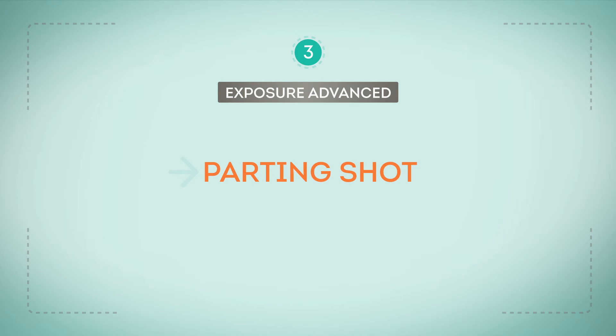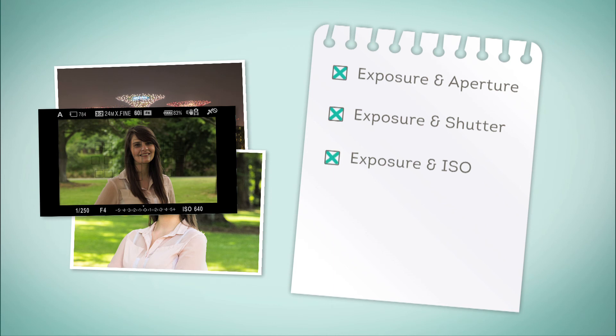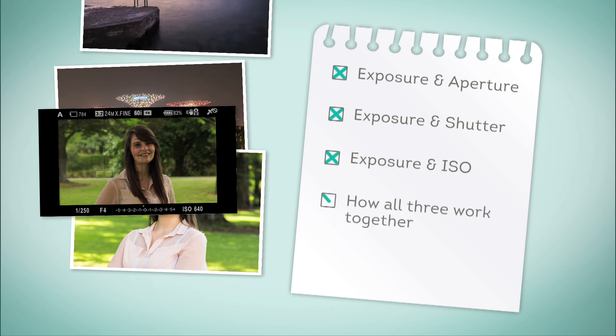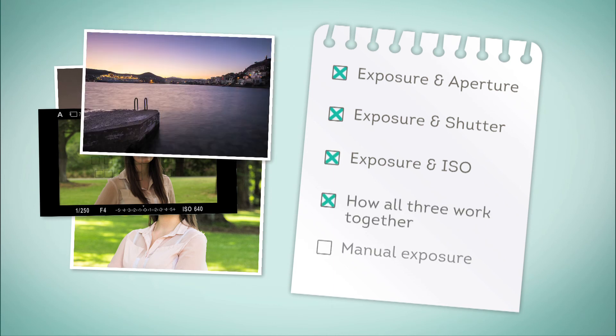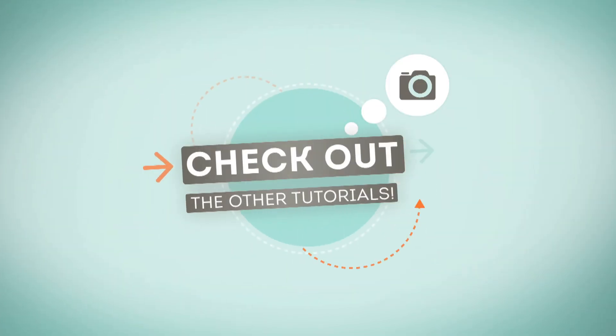Let's have a quick recap of what we've covered while looking at the finer points of exposure: exposure and aperture, exposure and shutter, exposure and ISO, how all three work together, and manual exposure. Now that you're familiar with exposure, make sure you check out the other tutorials in the series to see how else you can take creative control of your camera.